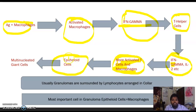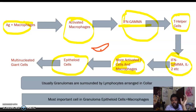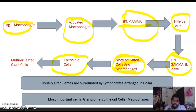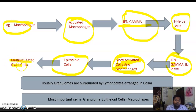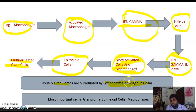This chain reaction results in more macrophage formation. These macrophages then transform into epithelioid cells. The name 'epithelioid' suggests they look like epithelial cells, but they have no basement membrane. Some epithelioid cells merge to form multi-nucleated giant cells. Granulomas are most commonly surrounded by a collar of lymphocytes — except in sarcoidosis, where this collar is absent.